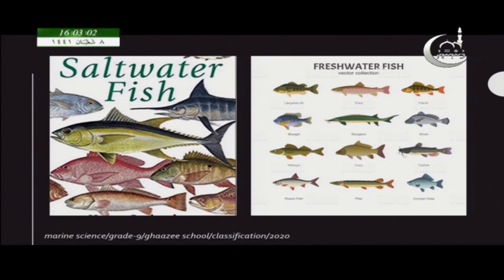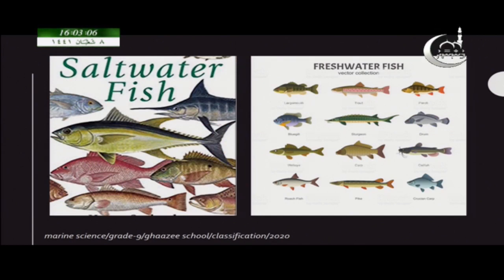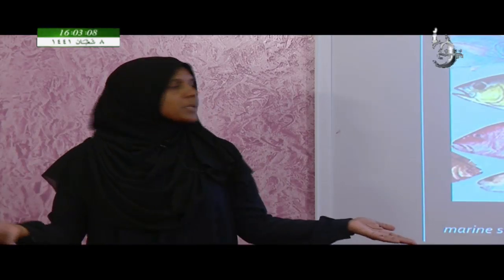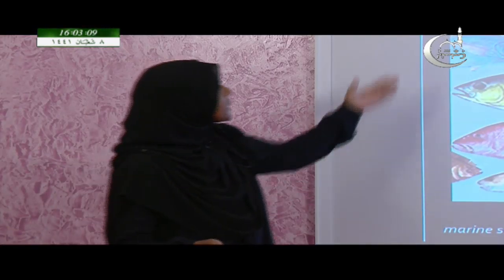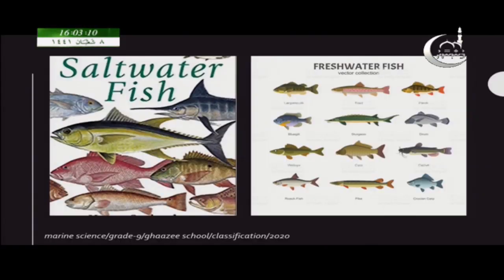Another example: when you look at fishes of the world, you can divide them into just two groups — freshwater fish or saltwater fish. That is also one way you can group organisms.